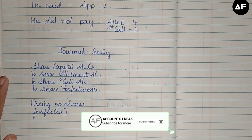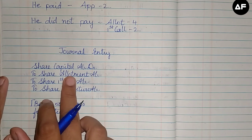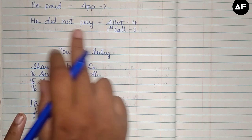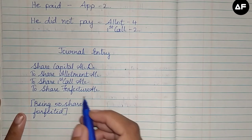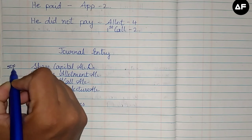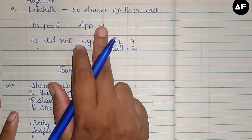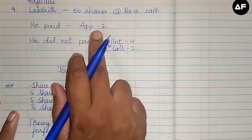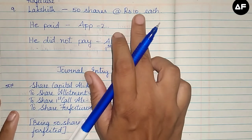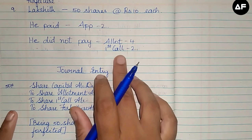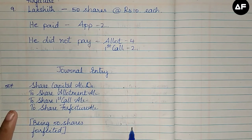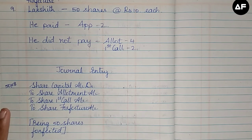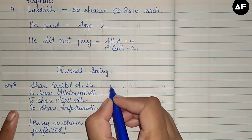Since both allotment and first call are unpaid, the journal entry is: Share Capital Account debit, to Share Allotment Account, to Share First Call, to Shares Forfeited Account. The called-up value here is only ₹8 per share — not the full ₹10 — because the directors cancelled the shares immediately after the first call without proceeding to the final call. So Share Capital = 50 × ₹8 = ₹400.